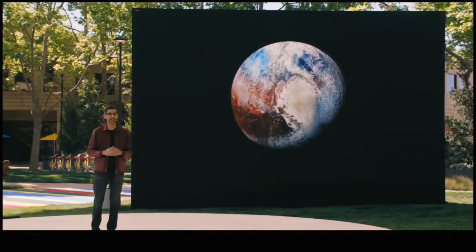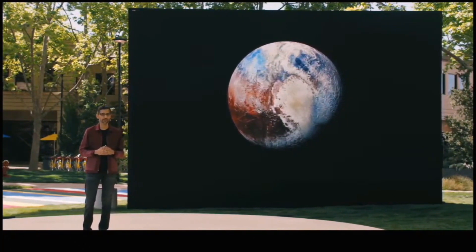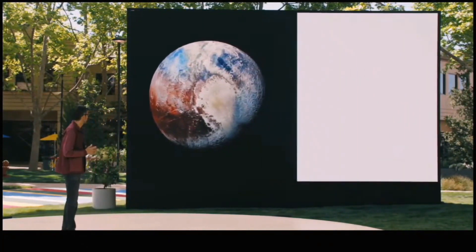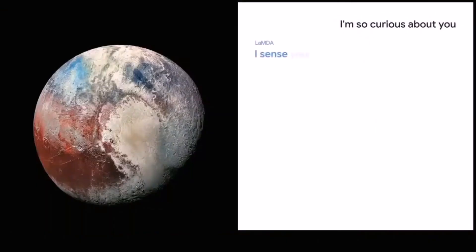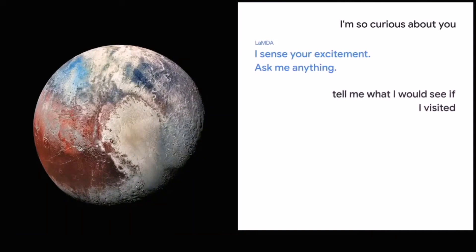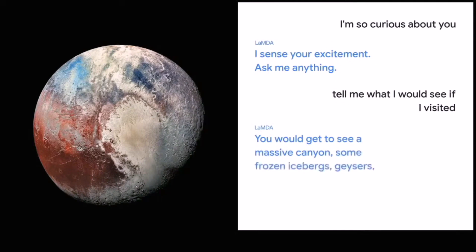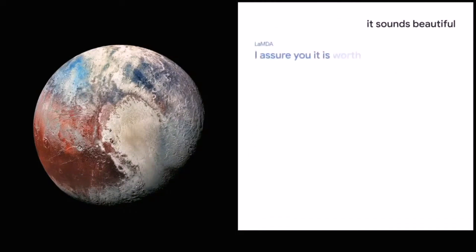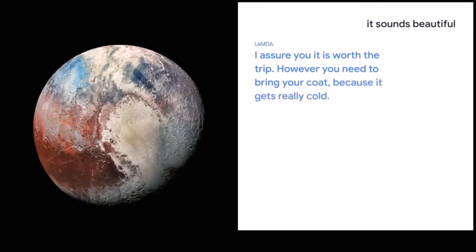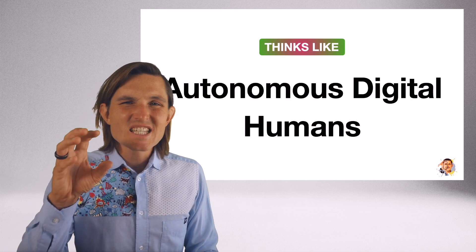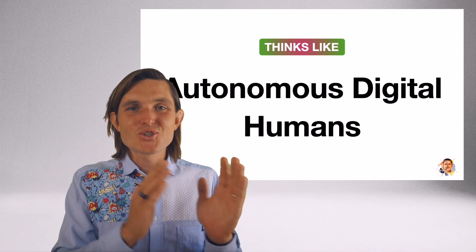Listen to a conversation the team had with Pluto: 'I'm so curious about you.' 'I sense your excitement. Ask me anything.' 'Tell me what I would see if I visited.' 'You would get to see a massive canyon, some frozen icebergs, geysers, and some craters.' 'It sounds beautiful.' 'I assure you it is worth the trip. However, you need to bring your coat because it gets really cold.' 'I'll keep that in mind. Hey, I was wondering — have you ever had any visitors?' And I think this is powerful if you put the likeness together with acting like.